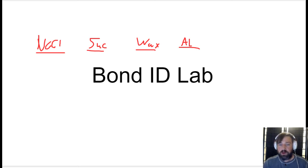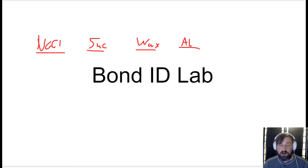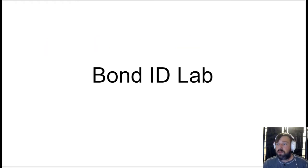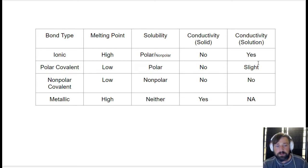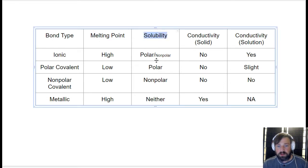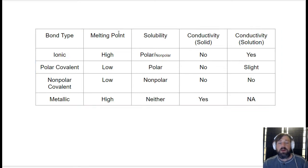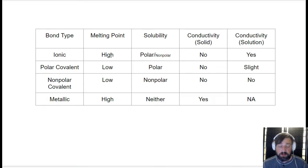We're going to go through and perform three different experiments on all four of these samples, and we are going to determine their properties. The tests we're going to be doing are a melting point test, a solubility test, and a conductivity test. For melting point, this is just when does it melt — does it melt at low temperatures or high temperatures? For this, we're going to stick with high and low; we're not going to get into an actual number. Ionic compounds melt at high temperatures, polar covalent and non-polar are low, and metallic is high.